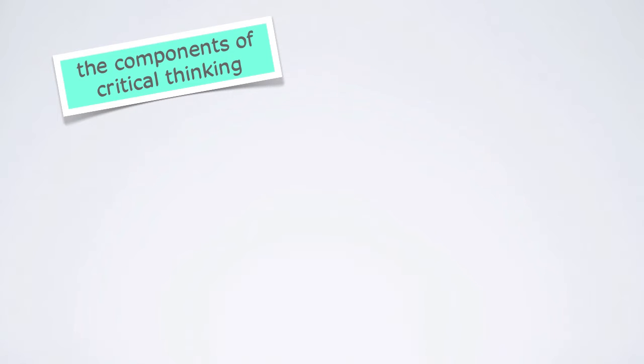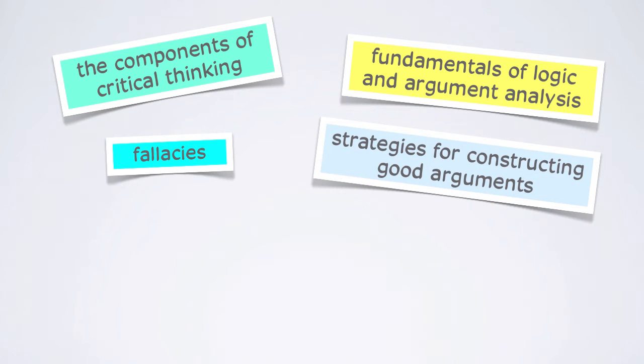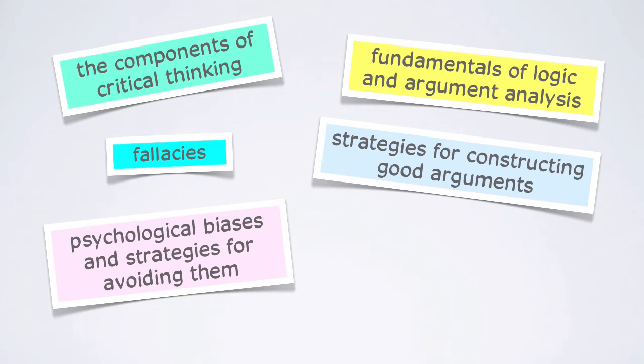Here you'll learn about the different components of critical thinking and why they're important. You'll learn about the fundamentals of logic and argument analysis. You'll learn about fallacies and strategies for constructing good arguments. And you'll learn about the psychological biases that can lead us to make faulty judgments and bad decisions, and strategies for avoiding them.